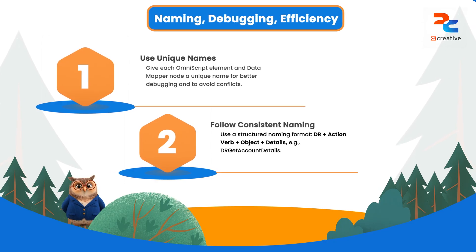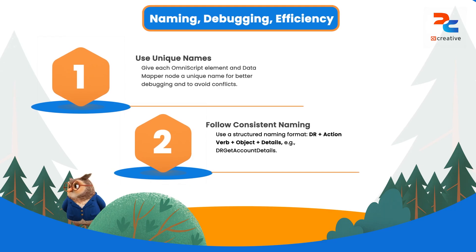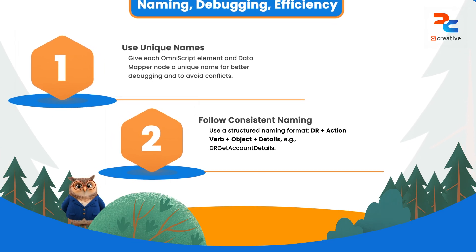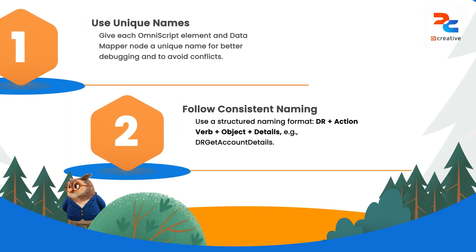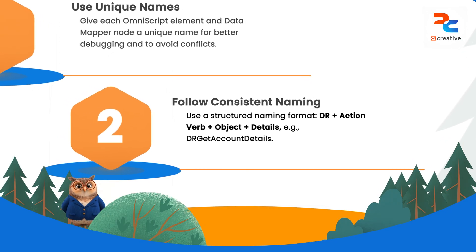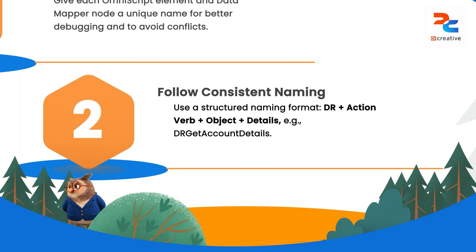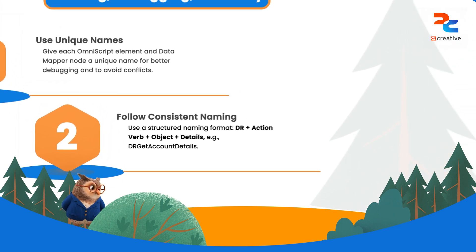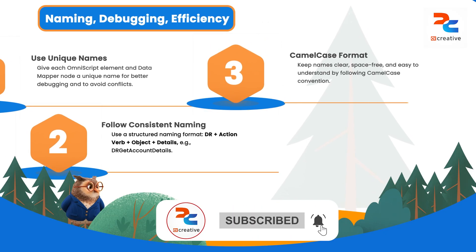The best practice for naming a data mapper is to use a consistent four-part format that provides clear context. It should start with a prefix like 'dr' telling anyone that this is a data mapper. Next, include a verb that explains its action, such as 'get' to extract data, 'load' to save it, or 'transform' to change the format. Then specify the main object it's working with, like 'account' or 'case'. Finally, add specific details to differentiate it, all combined in a space-free format like camel case.